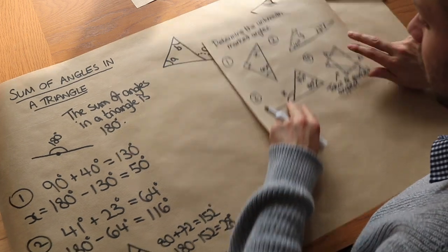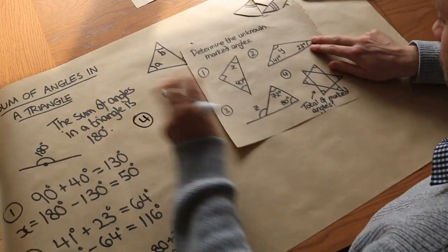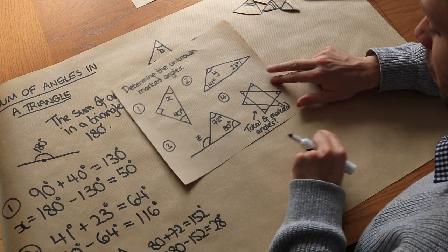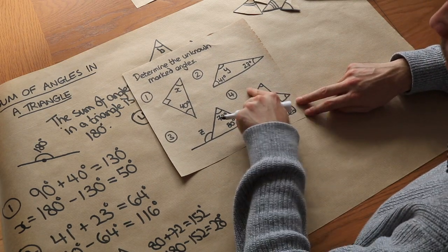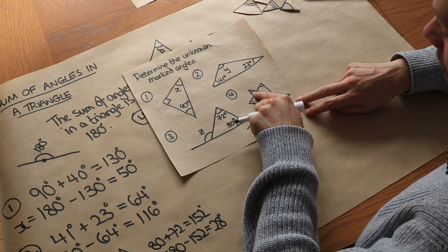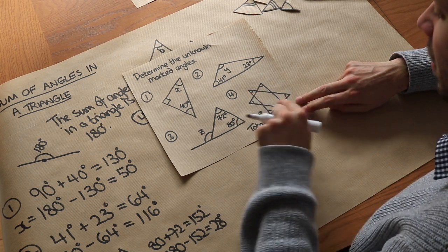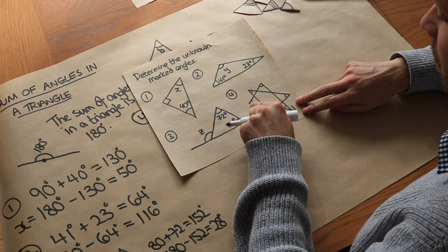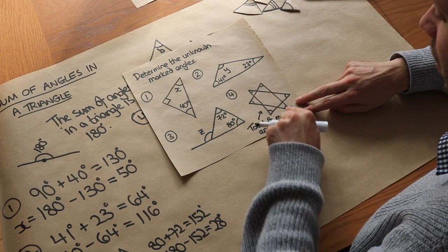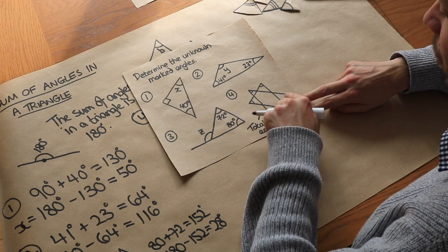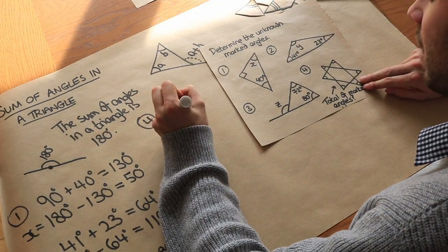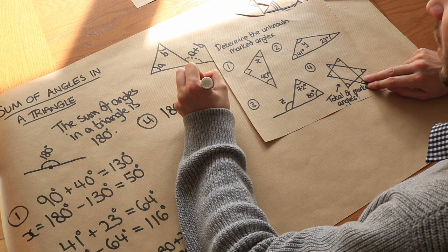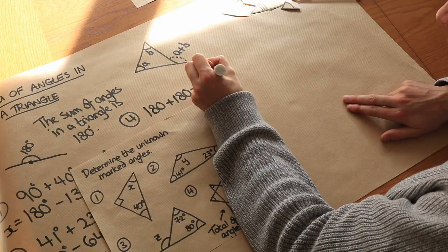Right let's finally do this question here. We've got two overlapping triangles and we want to find the total of all the marked angles. Well we know the sum of those three angles is 180 degrees and we know the sum of these three angles is also 180 degrees because that's another triangle. And therefore the sum of all six of them must just be 180 plus 180 which is equal to 360 degrees.